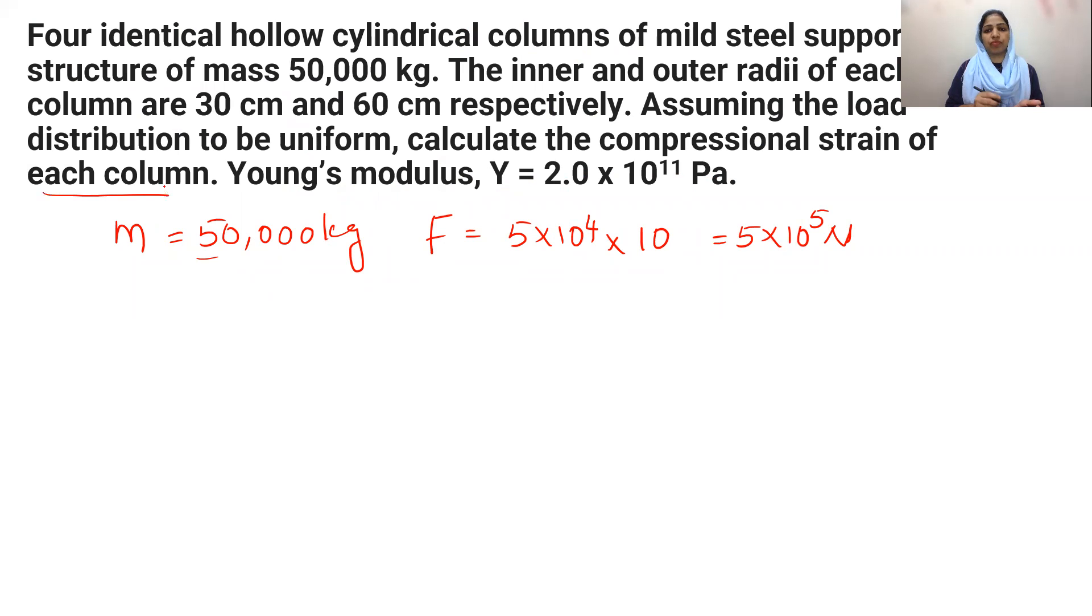We will see calculate the compressional strain of each column. We will see of 4 columns total strain of each column. Then we will see one column. Force on each column. Total force is 5 into 10 raised to 5. So, force on each column will be equal to 5 into 10 raised to 5 divided by 4. Four columns are equal to load distributed.